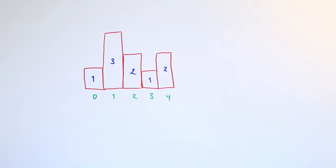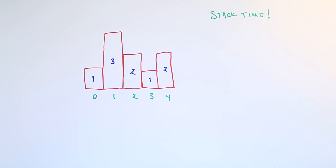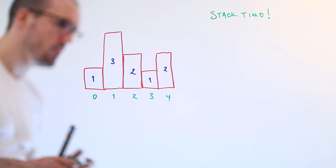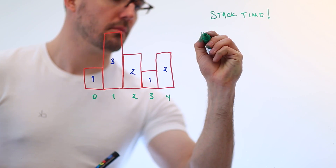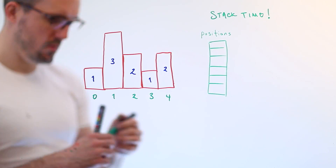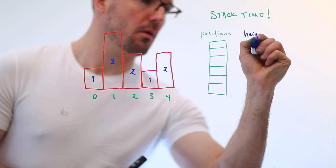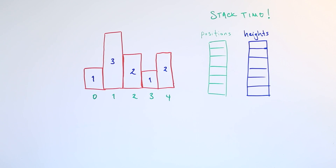A much better option is one that doesn't require any backtracking or recounting squares in the histogram again and again. The best solution I know uses a stack. The idea basically is that any time you reach a new height in the histogram going from left to right, you could be starting a new rectangle — but you won't know until you hit a lower height, until you've reached the terminal point of whatever that rectangle might be.